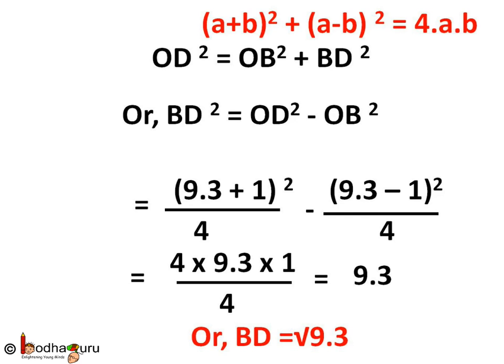Taking square root of both sides, BD will become square root of 9.3. This way we can find the length of any square root of a decimal number. That's all in this video, children. Bye bye.